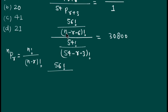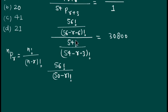We can simplify: in 56Pr+6, the value of n is 56, so 56 minus r minus 6 gives us 50 minus r factorial. So 56Pr+6 equals 56 factorial divided by (50 minus r) factorial.